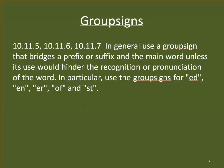A basic rule for all of the group signs is that, in general, if a group sign bridges a prefix or a suffix and the main word, we can use it unless its use would hinder the recognition or pronunciation of the word. There is a list of words in the back of the UEB rule book — Section 10 — which you want to become familiar with. It shows whether you can or cannot use the contractions. In particular, use the group signs for ED, EN, ER, OF, and ST as much as possible, as long as it's not violating some other rule.